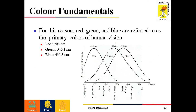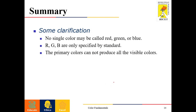The primary red is defined at 700 nanometers, green at 546.1 nanometers, and blue at 435.8 nanometers. Note that no single color may be called simply red, green, or blue — we can have various shades of each. RGB as specified by the CIE standard represents the primary colors, but the primary colors cannot produce all visible colors. These are the color fundamentals required for further color image processing.